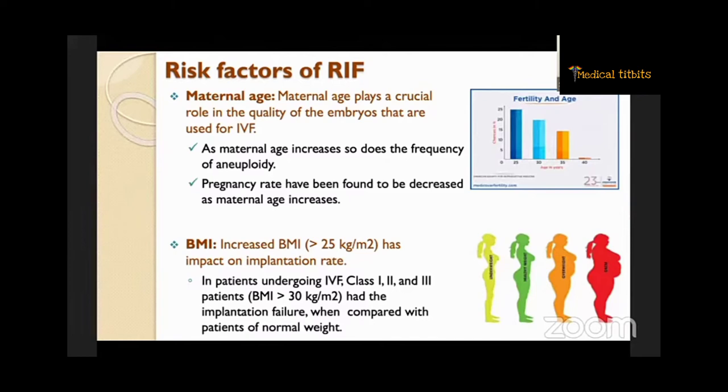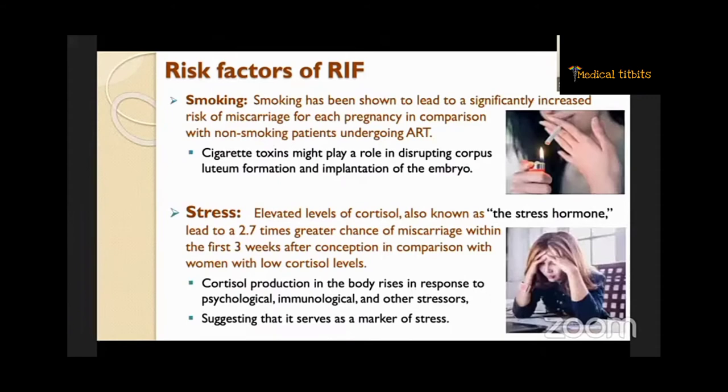Once BMI increases beyond the normal range, the pregnancy rate drops dramatically. Smoking has also been shown to lead to a significantly increased risk of miscarriage for each pregnancy in comparison with non-smoking patients undergoing ART. Cigarette toxins might play a role in disrupting corpus luteum formation and implantation of the embryo.